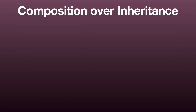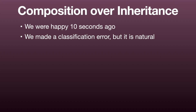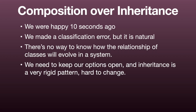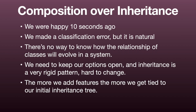We were happy 10 seconds ago — how could it be that we're now sad? Because we thought that we knew what the classification of the classes would be. We made a classification error. But it's natural — we cannot know the future of a class's evolution a priori unless we have created them for the specific region of inheritance. That's why we need proper system design and to keep our options open. Inheritance does the opposite: it's very rigid, acts as a contract that is hard to break, and the more you add features and methods, the tighter the coupling becomes.